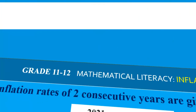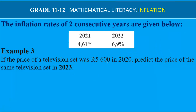In example three, the inflation rate is given for two years, and you must use it to predict a future price. If the price of a television set was R5600 in 2020, predict the price in 2023. Going from 2020, you factor in the inflation rate for 2021 and then for 2022 to predict the 2023 price.